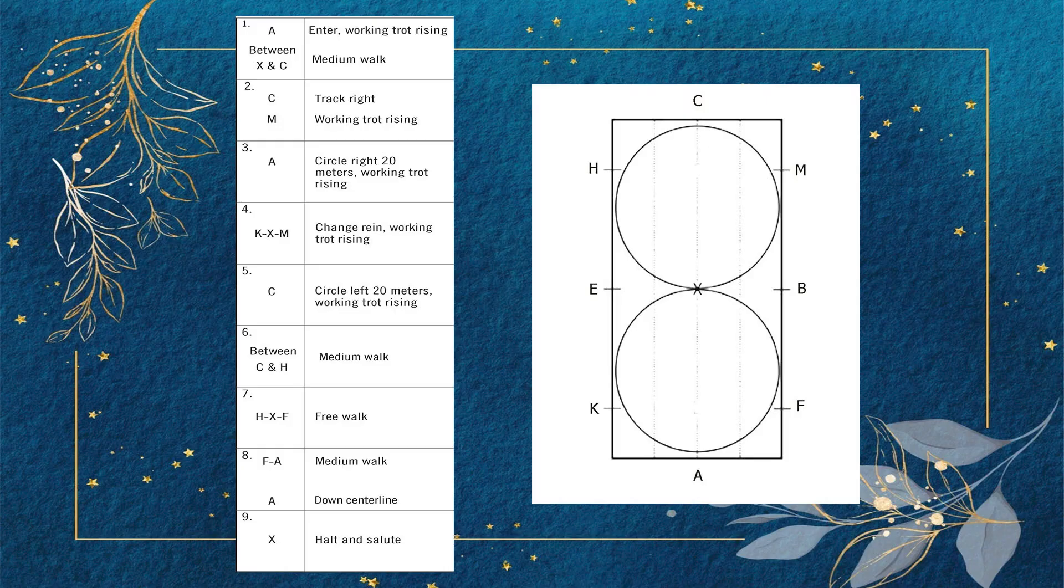A: Enter working trot rising. Between X and C: Medium walk.